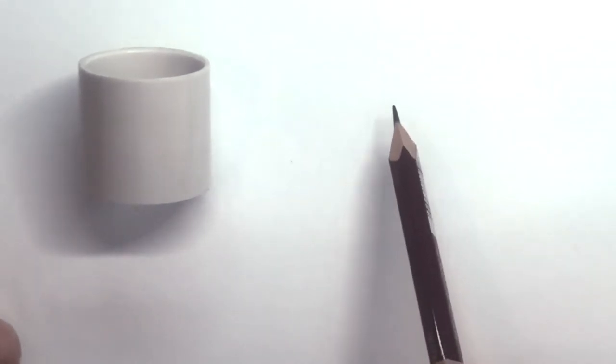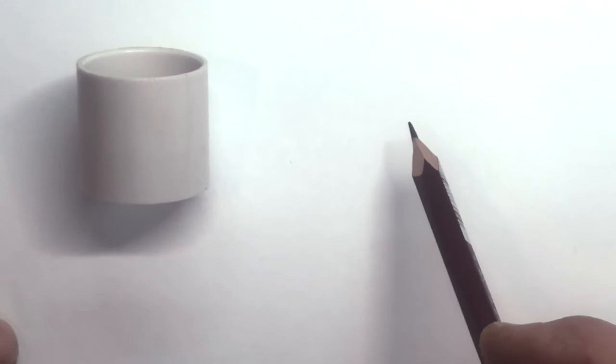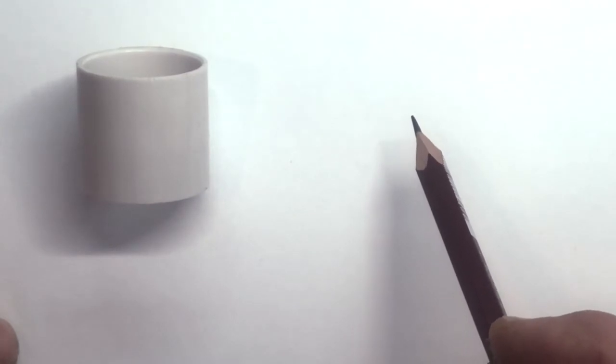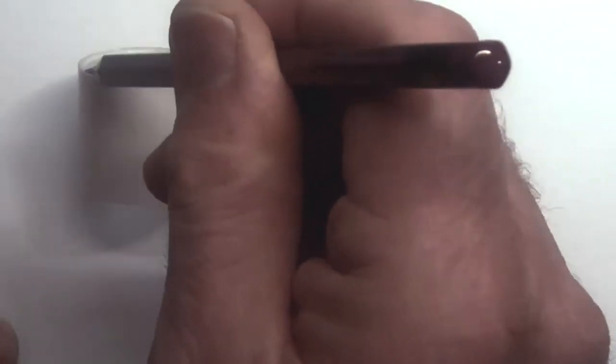I'm going to have a go at drawing a cylinder, and the key thing to remember about a cylinder is it's actually circular at the top.